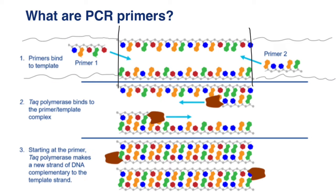By the way, using PCR technique, we cannot replicate the whole genome or whole chromosome, because it is only effective for thousands of nucleotides. Usually we use it between tens and hundreds of nucleotides for one fragment, for one PCR product, which we also call a replicon.